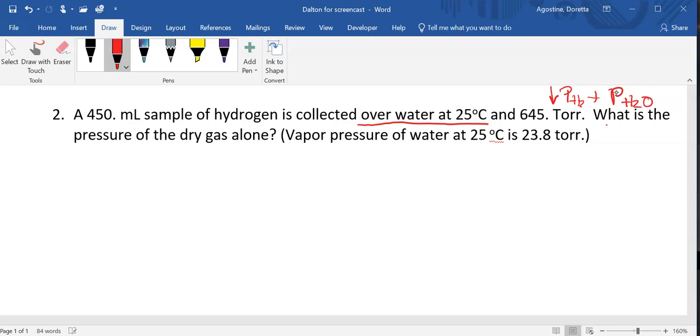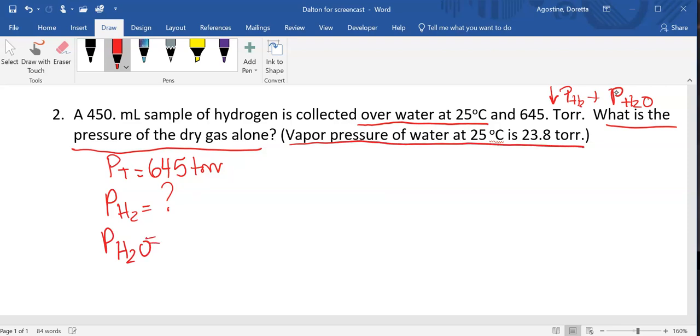So we're being asked, what is the pressure of the dry gas alone? So to get the dry gas alone, I would have to subtract. So here, P total is equal to 645 torr, and our P for hydrogen is a question mark. And our partial pressure for our water is given right here. So we know that the partial pressure of water at that temperature is 23.8 torr.